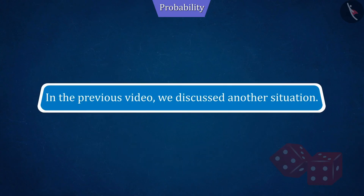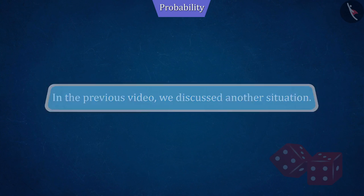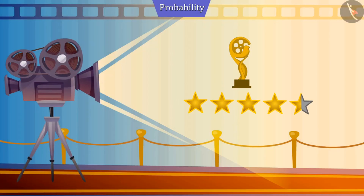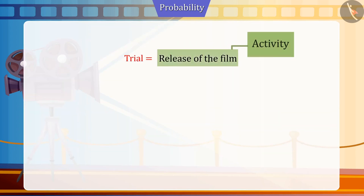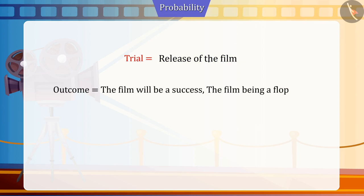In the previous video, we discussed another situation which discussed the possibilities of success of a film releasing next week. Can you tell what would be the sample space for this situation? Here, the release of the film is an activity, so it will be called a trial. There may be two possibilities upon the release of the film.